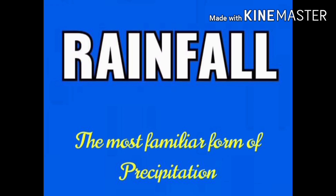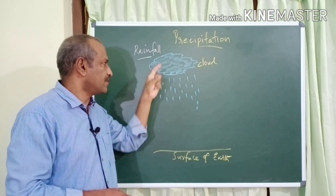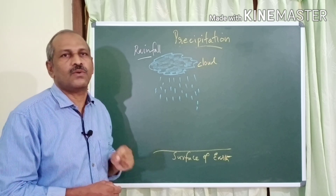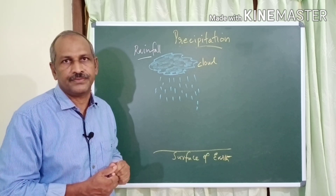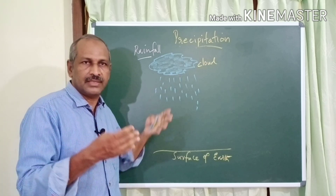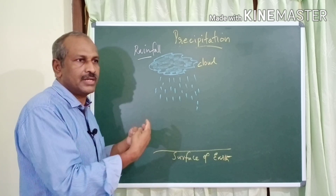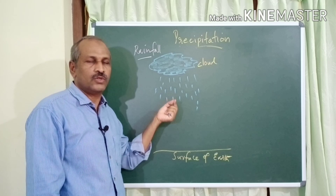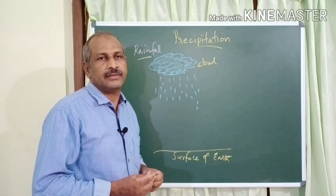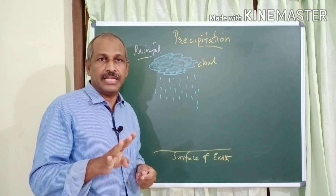Rainfall is the most familiar and commonest form of precipitation — precipitation in the form of water drops released from the cloud and reaching the earth's surface. As condensation continues, water droplets grow in size, overcome gravity, get released from the cloud, and fall on the earth's surface as rainfall. There are three types of rainfall, and this classification is based on their formation.